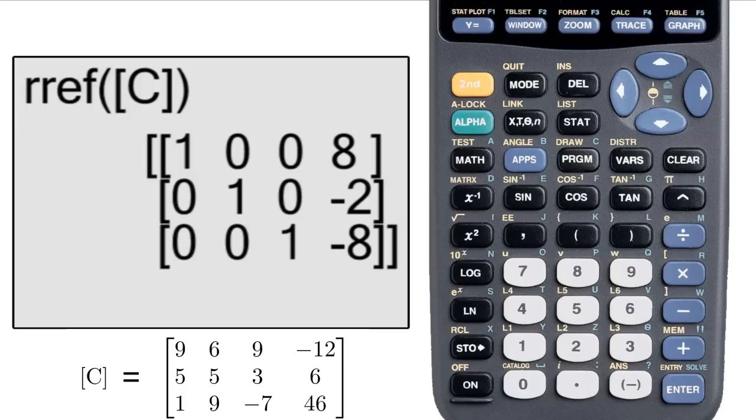Just as a quick reminder, reduced row echelon form is unique, but row echelon form is not. So if you find row echelon form by hand and then by calculator, don't be surprised if they're different. But if you get reduced row echelon form by hand and by calculator, they will be the same unless you've made a mistake.